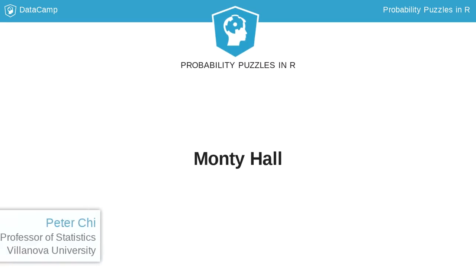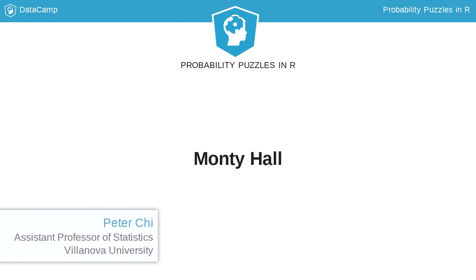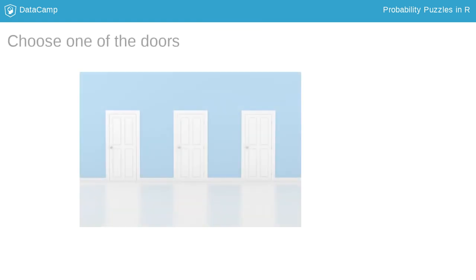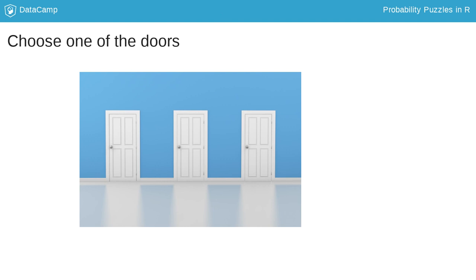Another well-known probability puzzle is Monty Hall, which is named after the host of a game show called Let's Make a Deal. In this puzzle, a contestant is shown three doors. Behind one of the doors is a prize, and the other doors contain no prize. Historically, the prize was a car, and the non-prizes were goats.